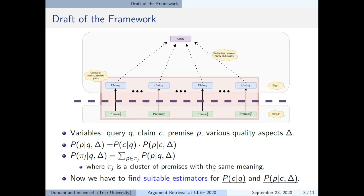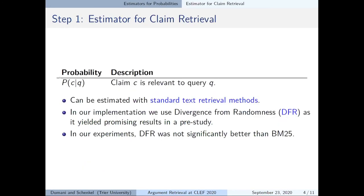Now we have the two components representing claim retrieval and premise ranking and need to find suitable estimators for them. To find the most similar claims to a query we use standard text retrieval methods, namely divergence from randomness. As our preliminary study here produced the most promising results for this task, but note that DFR was not significantly better than BM25, so we could also use this instead.